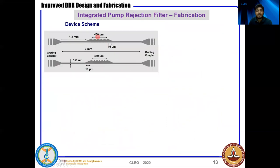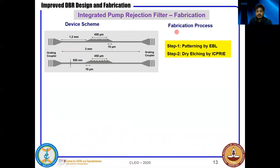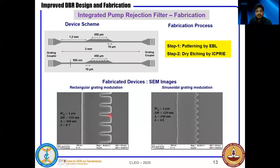We decided to fabricate 450 micron long DBRs of both sinusoidal and rectangular perturbation types. We kept a 10 micron taper for a smoother transition from the fundamental mode into the DBR region, and used grating couplers for light coupling in and out. These devices were fabricated in a single-step patterning by electron beam lithography followed by dry etching. The rectangular grating has a perturbation of 350 nanometers with a duty cycle of 0.7, whereas the sinusoidal grating has a perturbation of 128 nanometers with a duty cycle of 0.5.